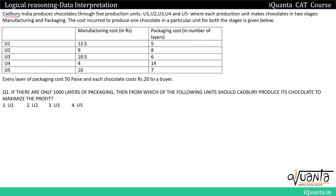The question is: Cadbury India produces chocolates through 5 production units U1, U2, U3, U4 and U5, where each production unit makes chocolates in two stages — manufacturing and packaging. The cost incurred to produce one chocolate in a particular unit for both the stages is given below.